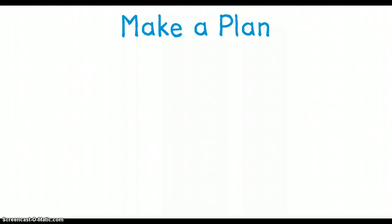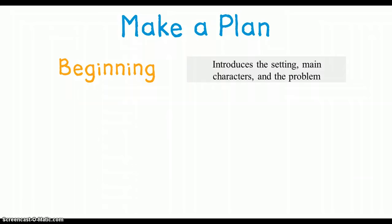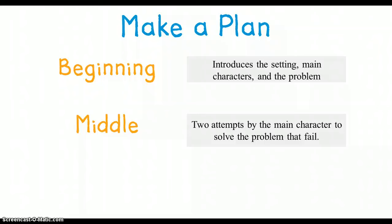Now I'm ready to make a plan, and when I go to make my plan, I need to think about the parts of a good narrative. A good narrative should always have a beginning that introduces the setting, main characters, and the problem. It should also have a middle that has two attempts by the main character to solve the problem that fail. And it should have an end, which includes a third attempt that solves the problem.